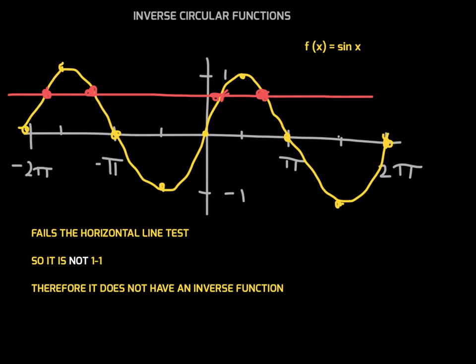For the sine function, the restriction to consider is from negative π/2 to positive π/2. I'm highlighting this piece of the graph in blue. Just look at that piece from negative π/2 to positive π/2 — if we only look at that piece, it will pass the horizontal line test. This function will be one-to-one if we restrict the domain to negative π/2 to positive π/2.